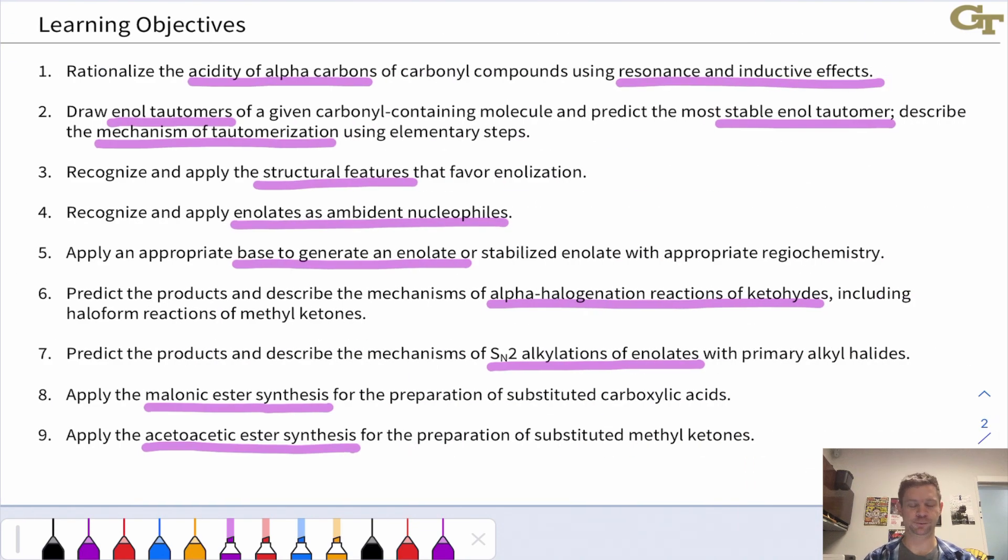All right, let's talk learning objectives. Now, this is a very large list of learning objectives for this unit because this unit, at least in the Klein third edition textbook, encompasses formation of enols and enolates, basic functionalization reactions at the alpha position where we do a substitution of an H at the alpha position for an electrophile, as well as more complicated condensations like the aldol-clason condensations, conjugate additions like the Michael reaction. There's a ton of stuff here.